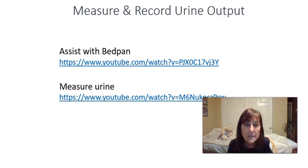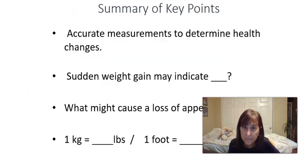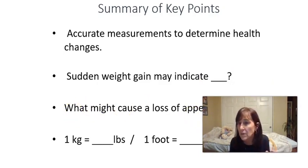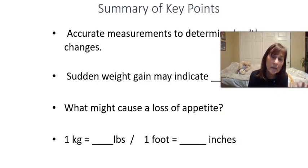Summary, key points: accurate measurements determine changes in health, especially fluid retention from heart or kidney problems, and weight gain from heart or kidney problems. What might cause appetite loss? Someone being sick, side effects of medicine, cancer. How do we convert? One kilo equals 2.2 pounds, and one foot equals 12 inches. Short one for chapter six, thank you.